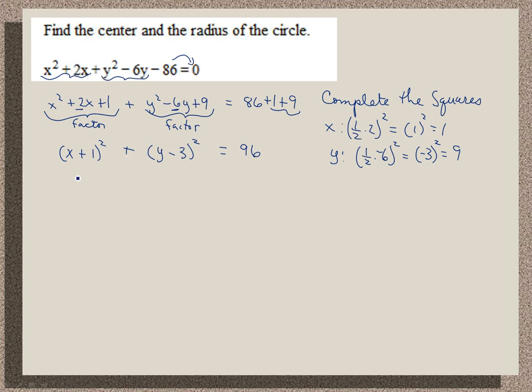So from here we can identify the center and the radius. Notice that our center at the point (h, k), h has to be minus negative 1, is negative 1. k is 3, and the radius is the square root of 96.